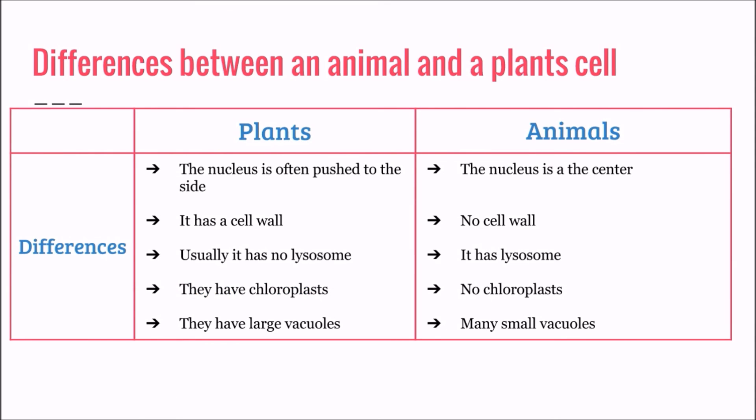The differences between an animal and plant cell: plant cells have their nucleus often pushed to the side, while in an animal cell it is at the center. Plant cells have a cell wall while animals don't. Plant cells usually have no lysosomes while an animal cell usually has. Plant cells have chloroplasts, while animals have many small vacuoles.